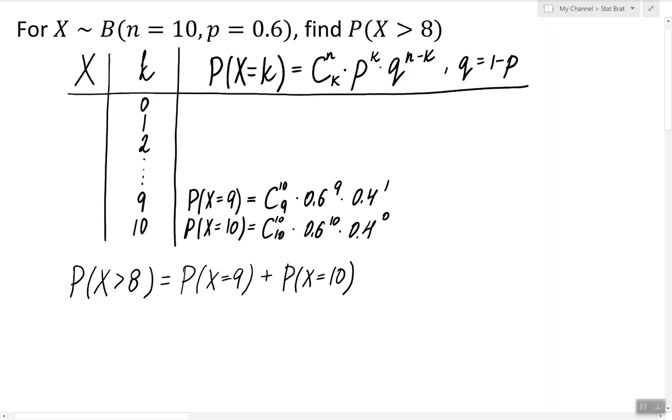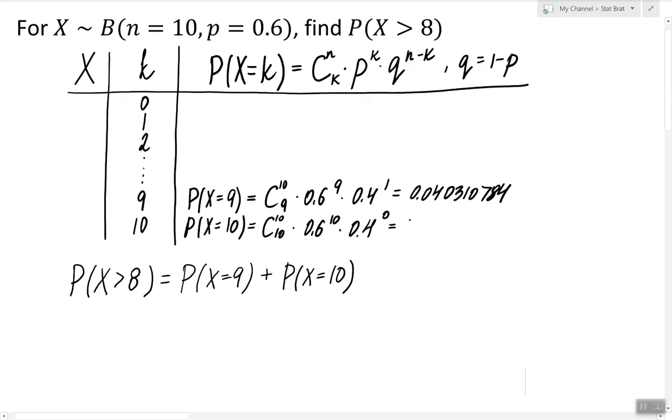So finding these probabilities is just a matter of plugging in these numbers in a calculator. I'm just going to save some time and write the answer. Probability of X equals 9 is 0.040310784 and the probability of X equals 10 is 0.006046618.